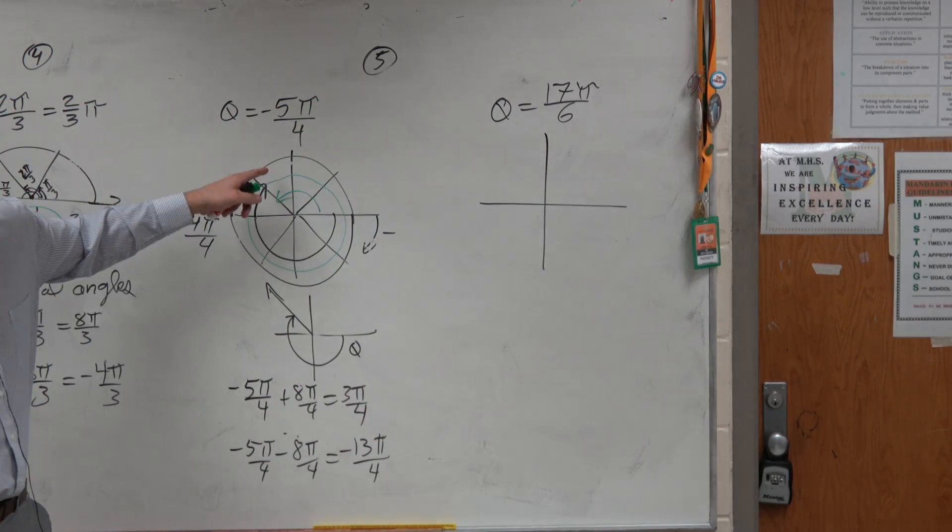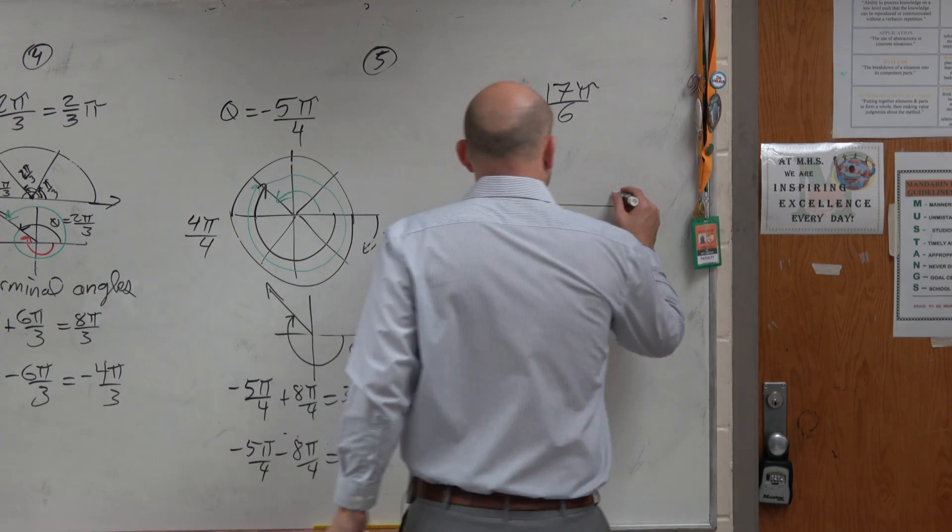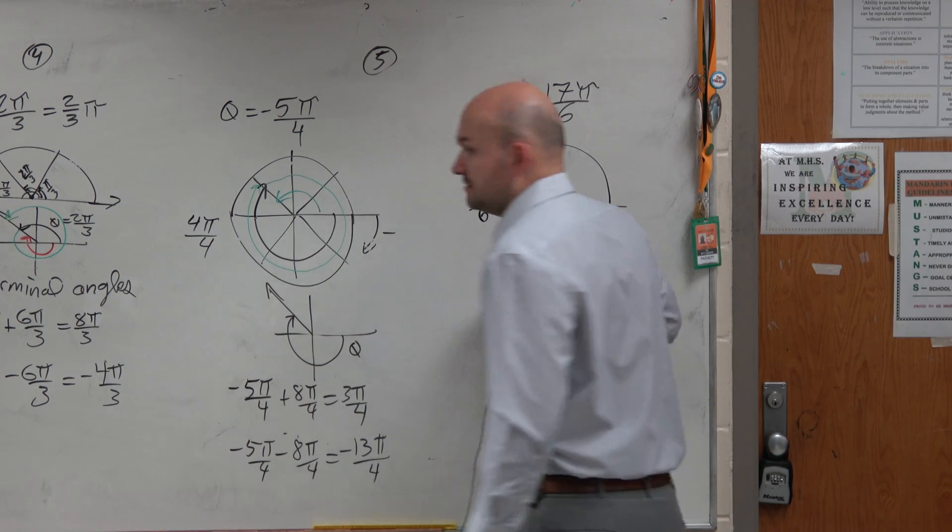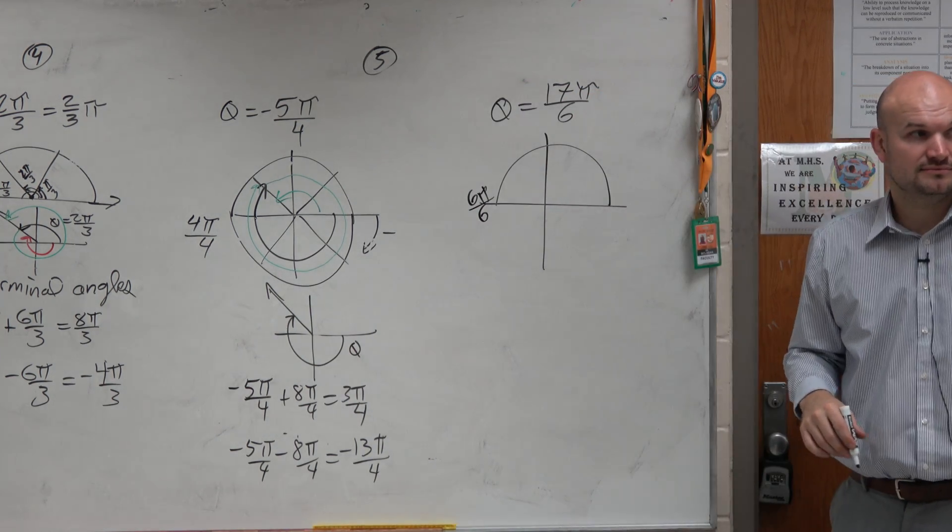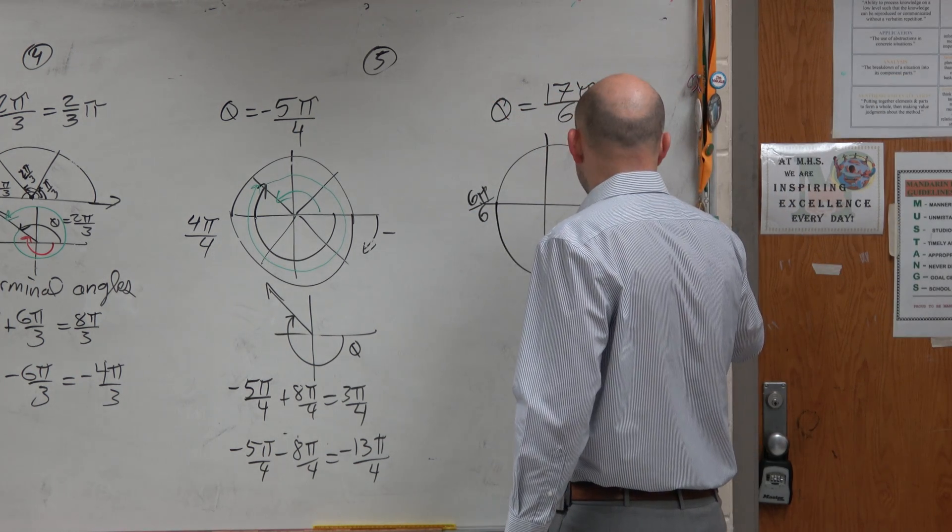So we made this one a little bit easier by going 4π over 4. Here, we know it's 6π over 6, right? Well, a full revolution is 12π over 6.